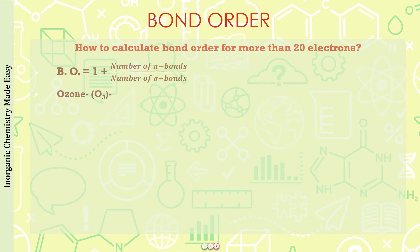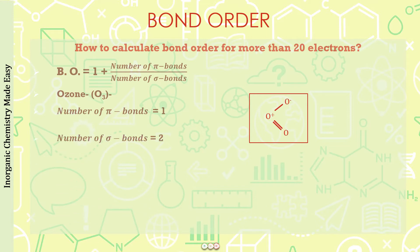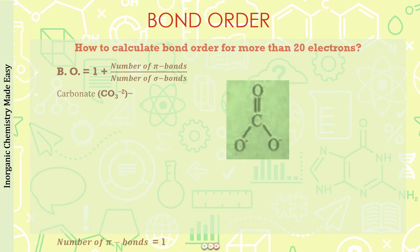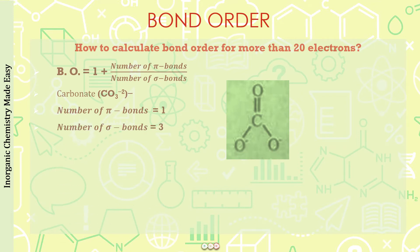For the ozone molecule, drawing the structure shows one pi bond and two sigma bonds. So bond order equals one plus one divided by two, which is 1.5 — the same value again. For the carbonate ion, the pi bonds equal one and sigma bonds equal three. So one plus one divided by three gives 1.33 — the same value. Whichever trick you prefer, you can use it.